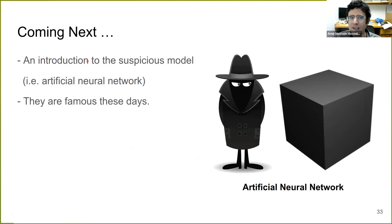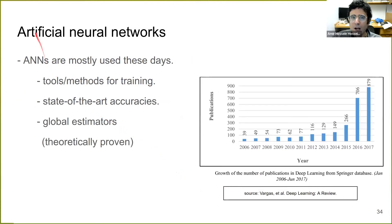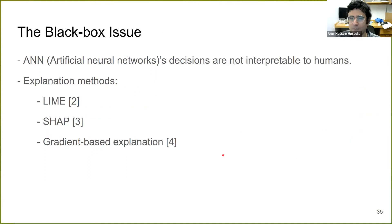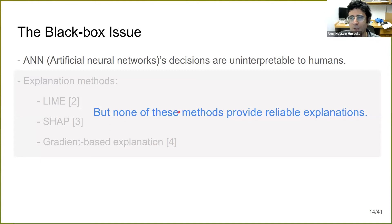Coming next is an introduction to the suspicious model — ANNs. Artificial neural networks are commonly used because of state-of-the-art accuracies and because they are theoretically proven global estimators. Usage in a Springer dataset has been ramping up recently. ANNs have the black box issue — their decisions may not be interpretable to humans. There are some explanation methods like LIME, SHAP, gradient-based methods, but none of these provide reliable explanations because they bring in additional assumptions. The explanation method I'm going to show you doesn't impose any additional assumption.